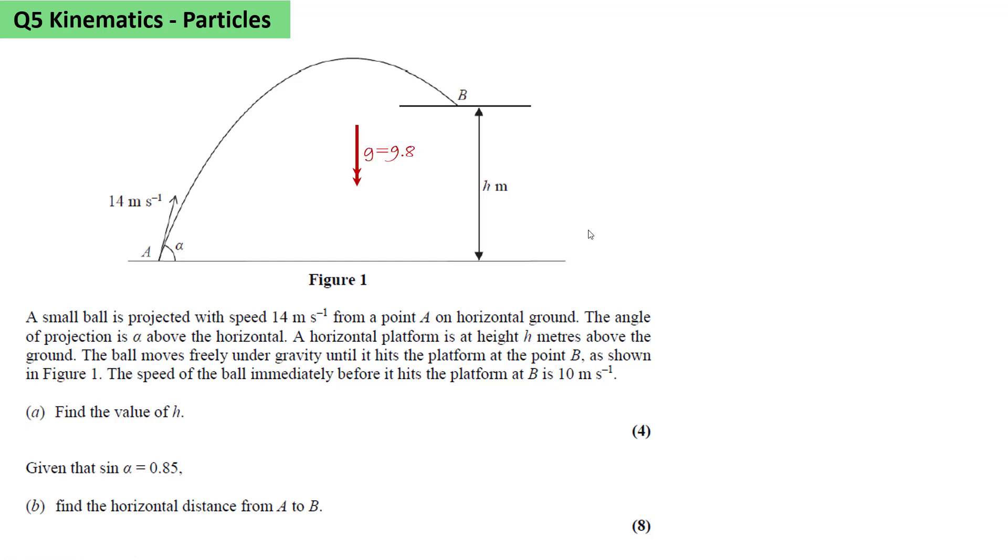A small ball is projected with a speed of 14 meters per second from a point A on horizontal ground. The angle of projection is alpha above the horizontal. A horizontal platform is at height H above the ground. The ball moves freely under gravity until it hits the platform at point B. The speed of the ball immediately before it hits the platform is 10 meters per second.